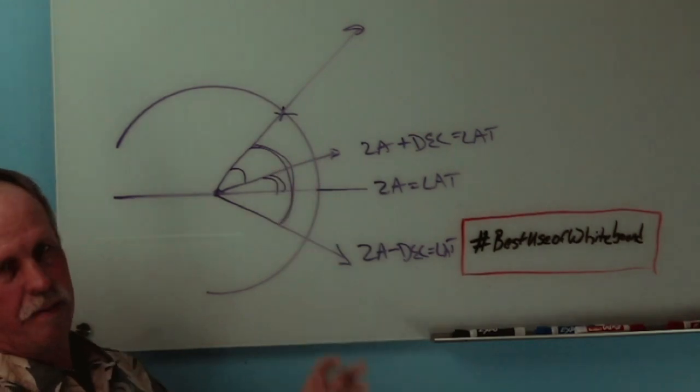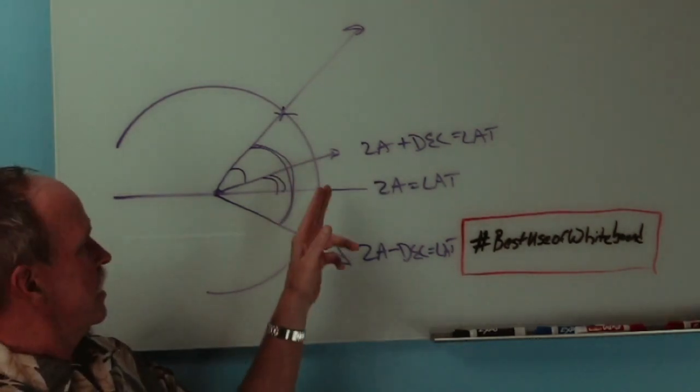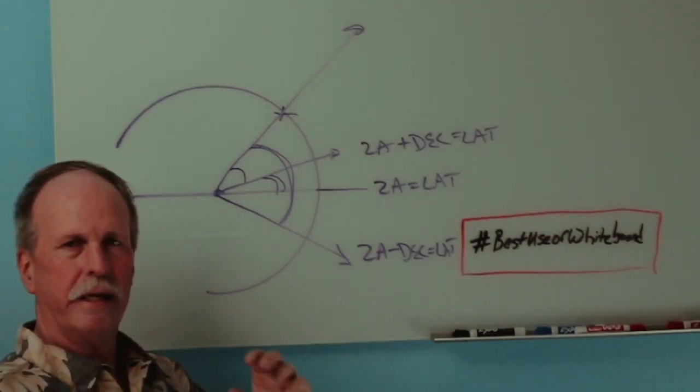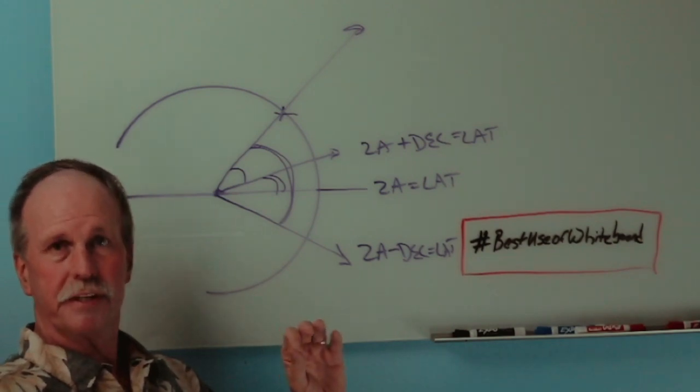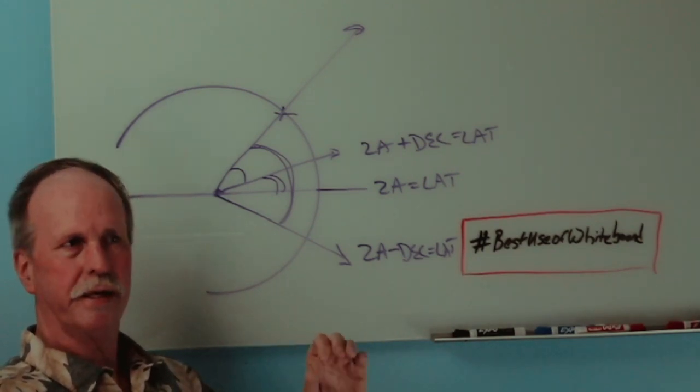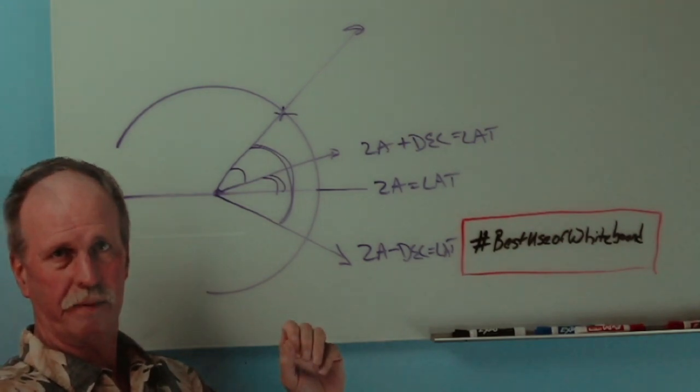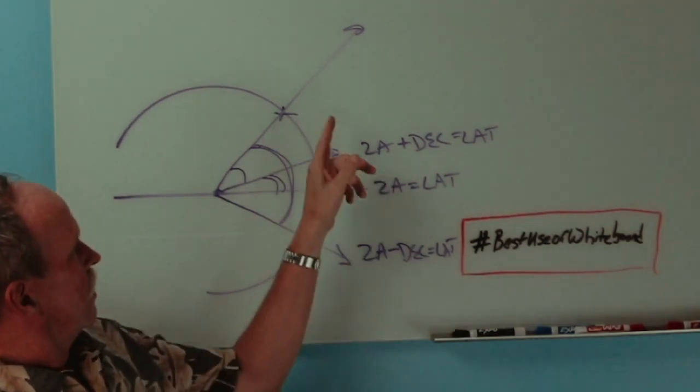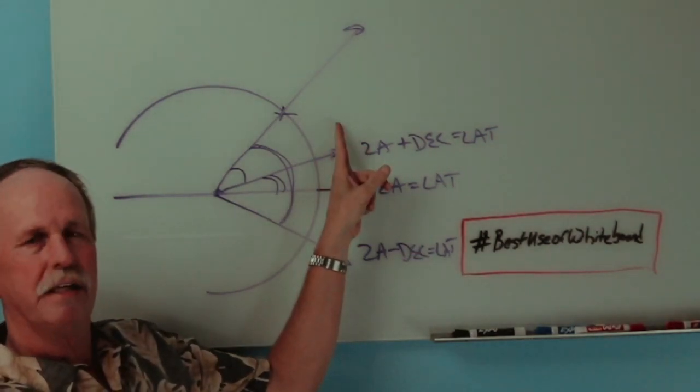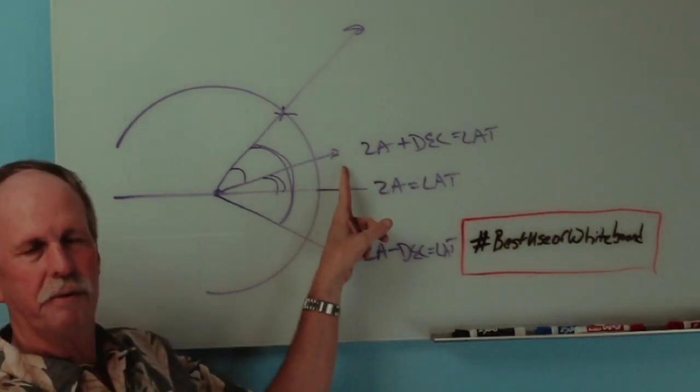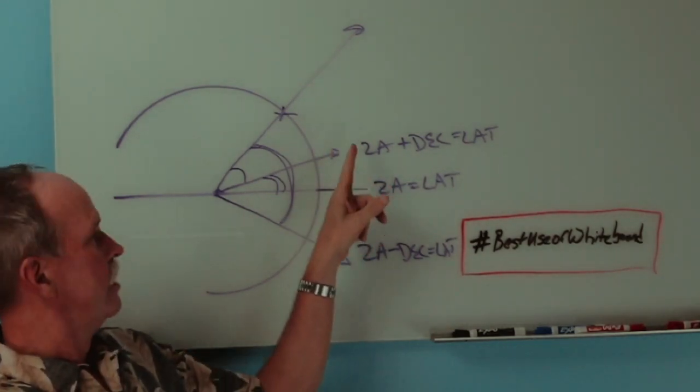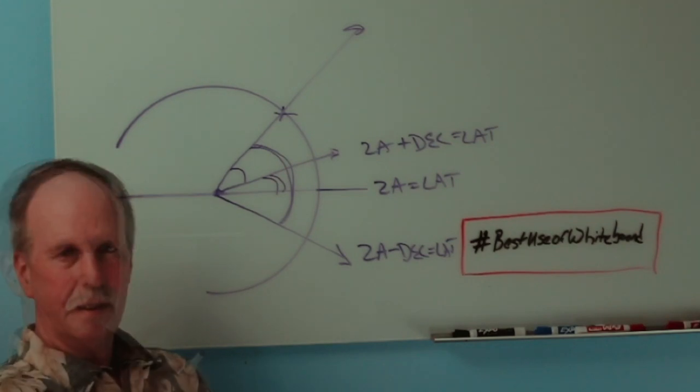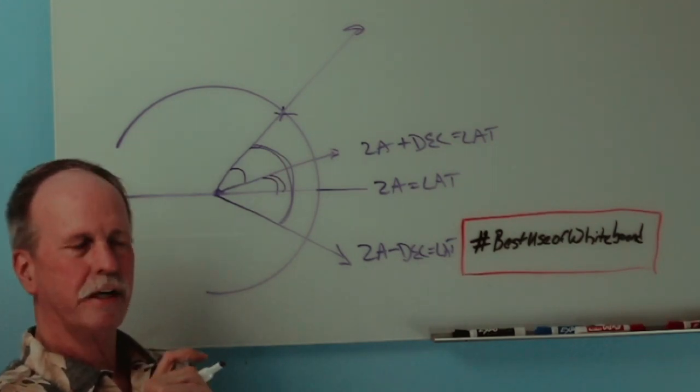So, the first thing that you have to say is, well, what hemisphere am I in? Second, is the Sun between me and the equator? Is it on the equator? Or is it on the other side of the equator? And for that, you look up the declination of the Sun in the Naval Almanac and it'll tell you what it is every hour of every day of the year. So, for example, when I was in Florida, the Sun was north of the equator. My zenith angle that I measured was about 15 degrees. The declination was also about 15 degrees. So, you add them together and you found that my latitude was approximately 30 degrees.